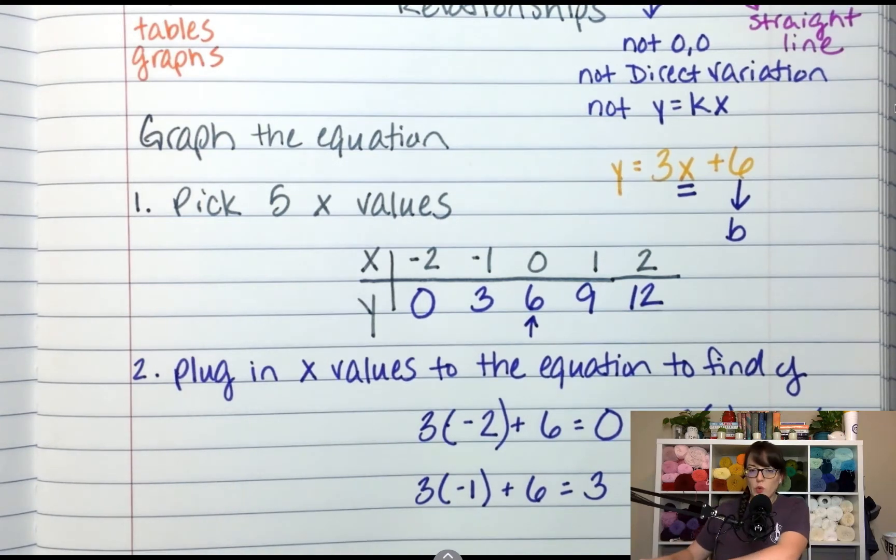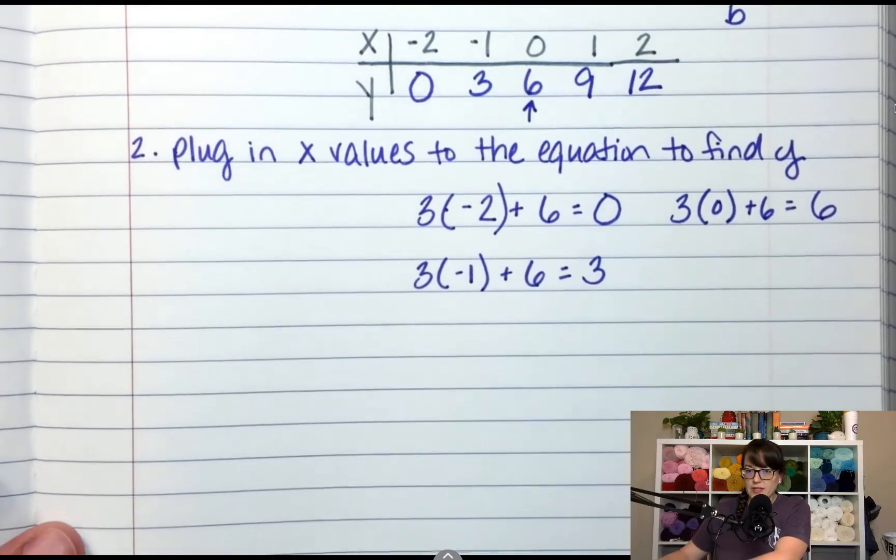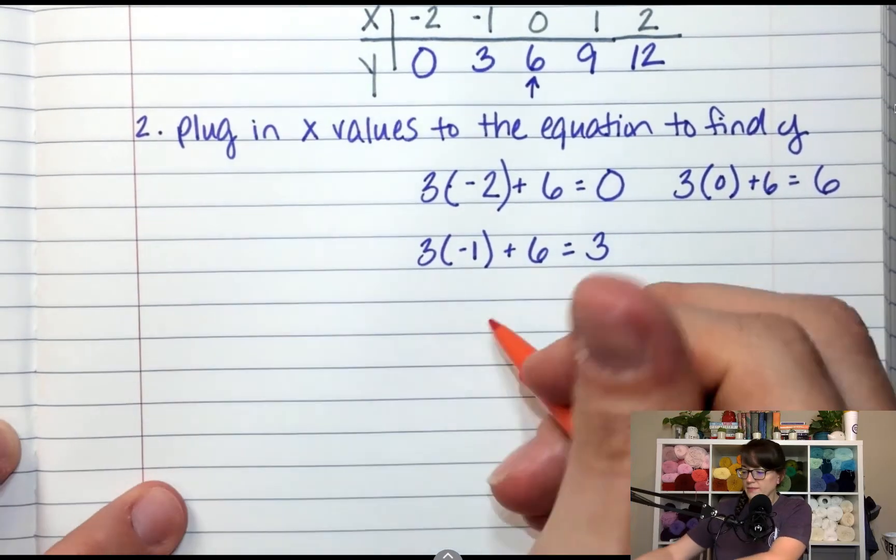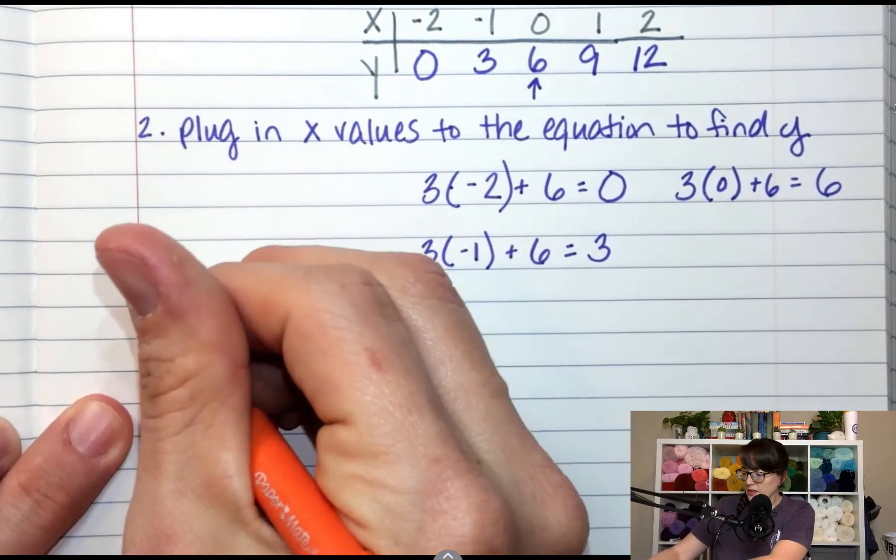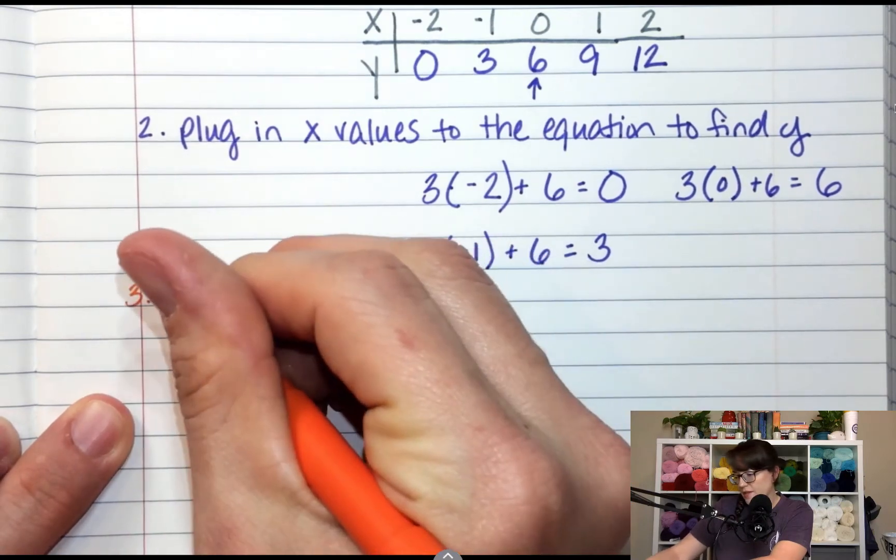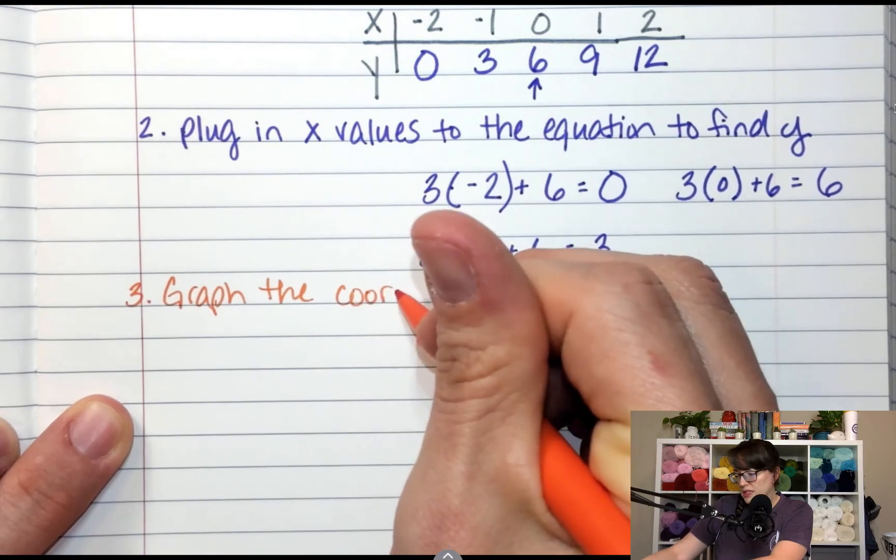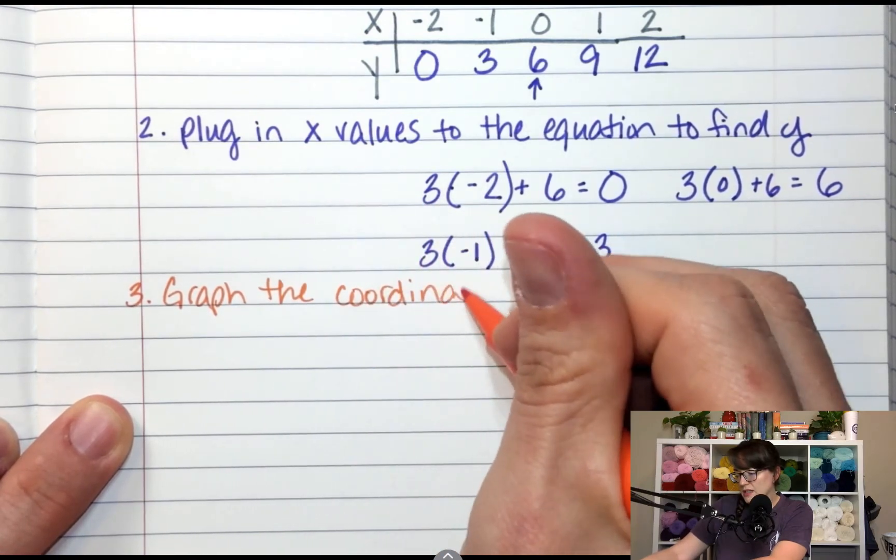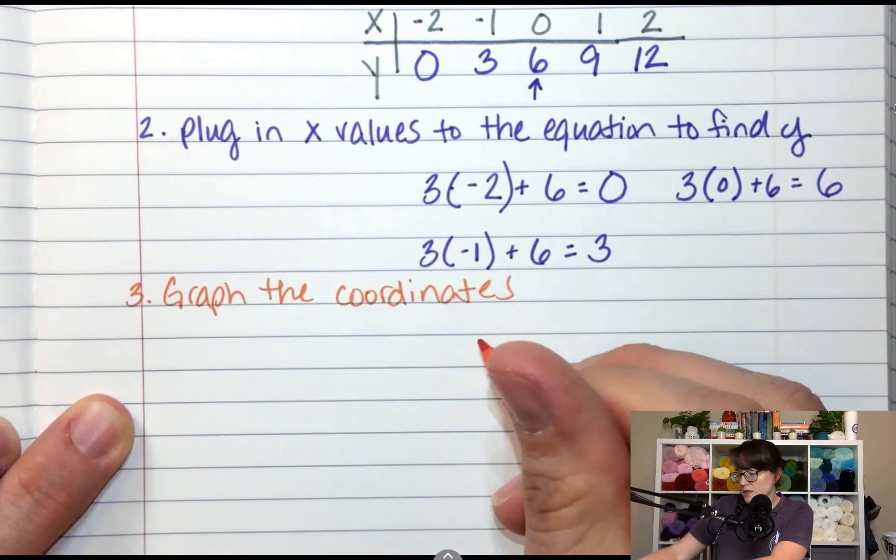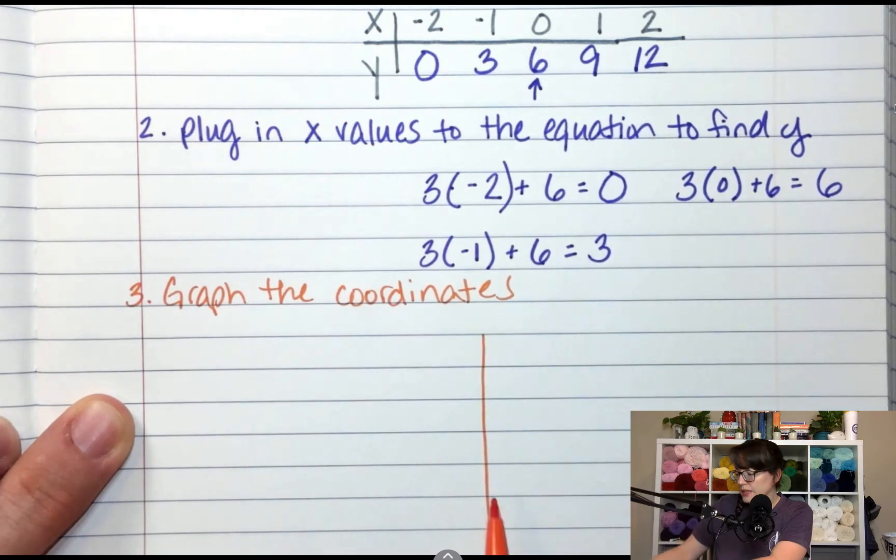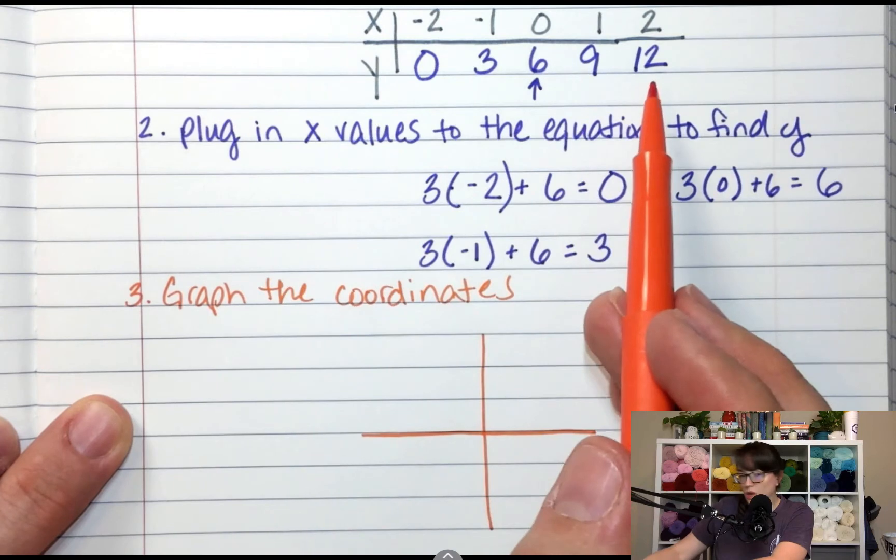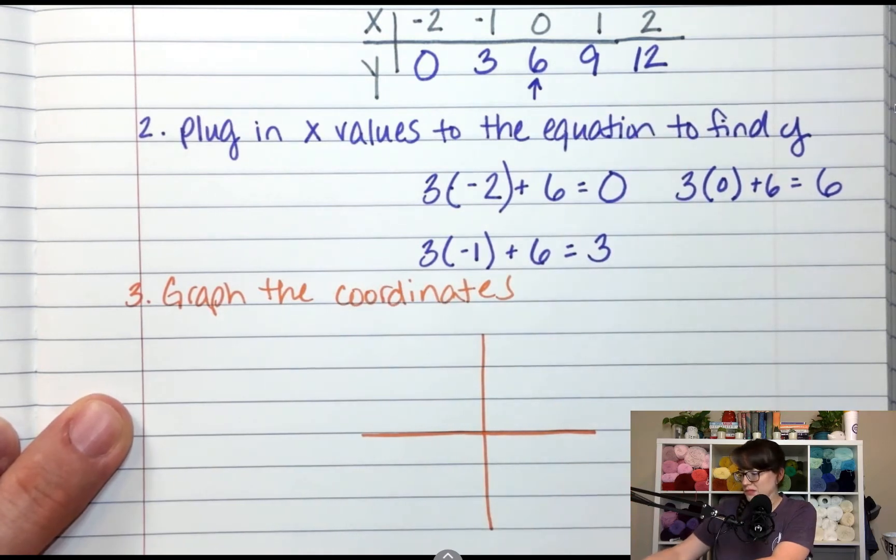We're going to graph those coordinates on a coordinate plane. So step 3, if it asks you to graph, we're going to graph the coordinates. So it doesn't have to be pretty. You just have to get the idea. And we need to go all the way to 12. Okay.